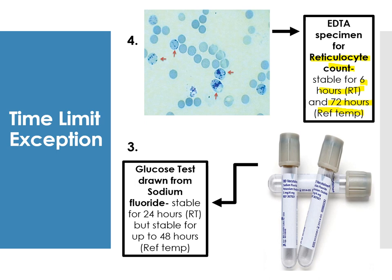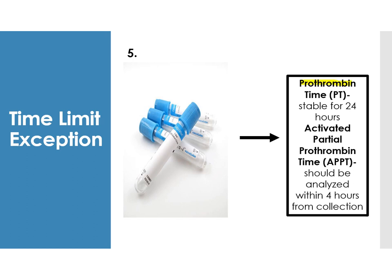For a blood smear, you smear the blood first and then stain it. For a reticulocyte count, you stain first, then incubate, then smear. For glucose tests drawn from sodium fluoride tubes, the specimen is stable for 24 hours at room temperature and up to 48 hours at refrigerator temperature. Prothrombin time (PT) is stable for 24 hours. Activated partial thromboplastin time (APTT) — note: APTT has 4 letters, so remember it must be analyzed within 4 hours.